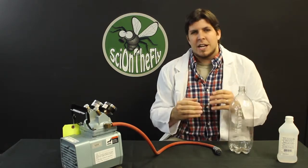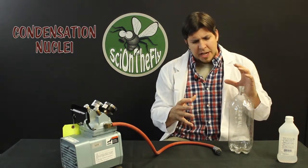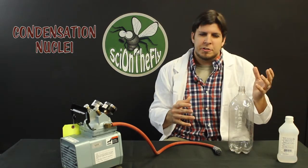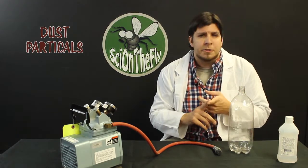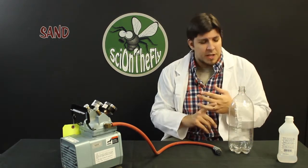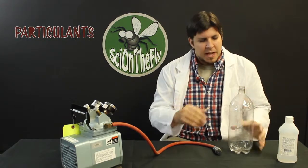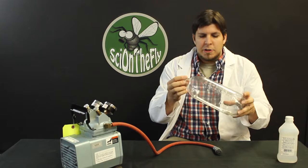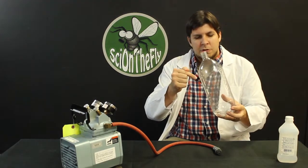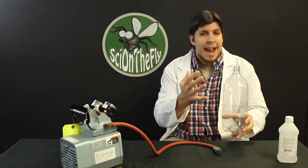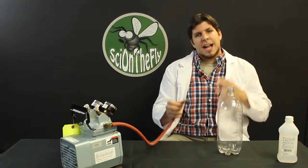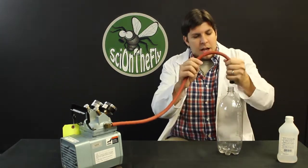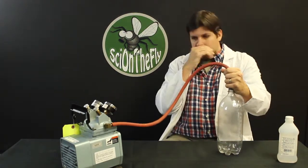We call that a condensation nuclei. And typically, a typical condensation nuclei would be like dust particles, sand, salt, and we call those particulates. What I've done here is I've just kind of created something for the water vapor that's already inside this tube to cling on to. I'm going to add some pressure now and create a high-pressure system inside of our tube.